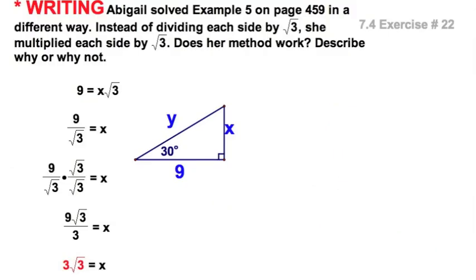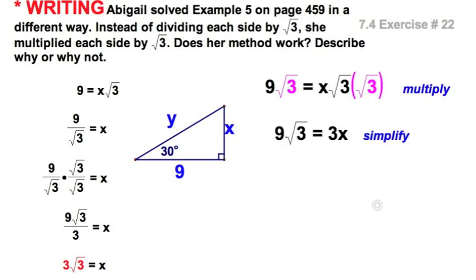Here's example 5 from our textbook. Let's see how Abigail decided to do it. Instead of division, we're going to try multiplication. See how that worked out for her. I simplify. On the right side of the equation, I've got 3x. I've got 9 radical 3 on the left. Let's divide both sides by 3. That divides out nicely, and x still comes out 3 radical 3. Same thing.